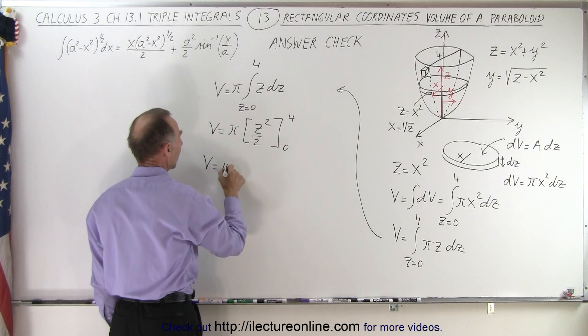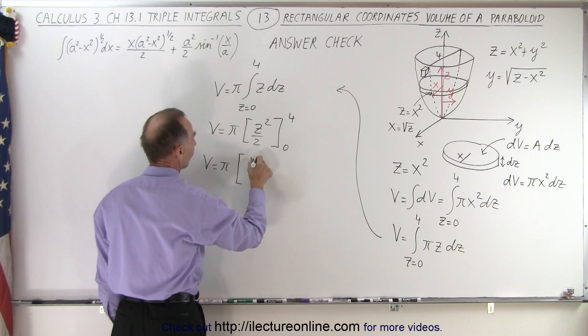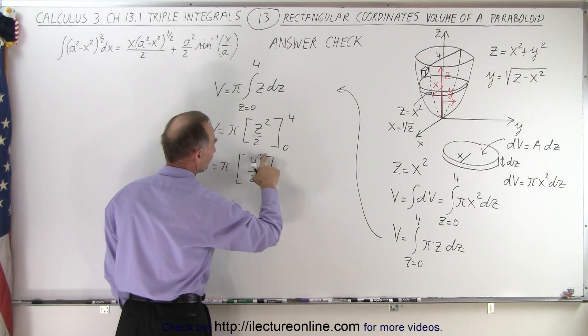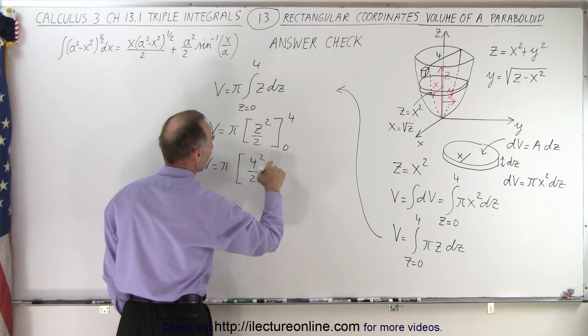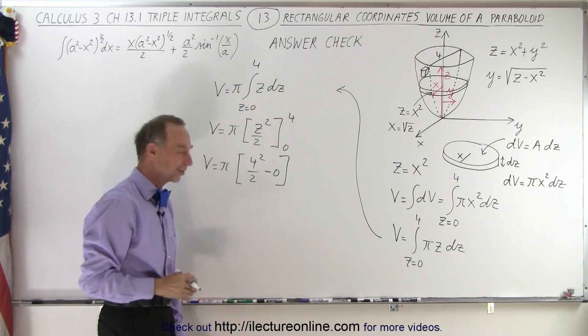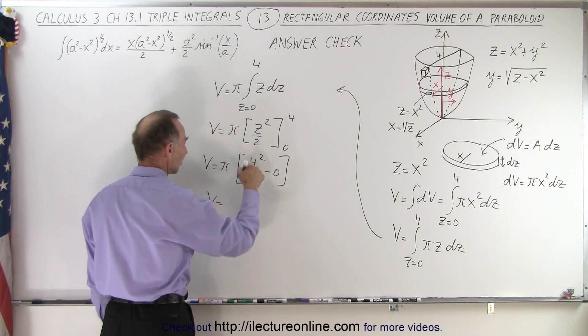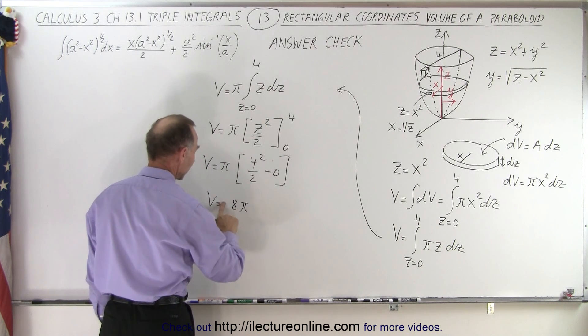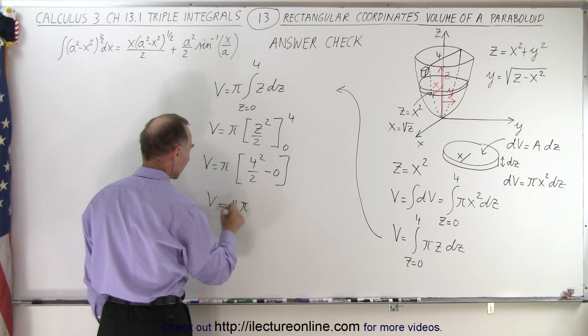So V = π times 4²/2, minus 0 when you plug in the lower limit. V equals 16 divided by 2, which is 8π.